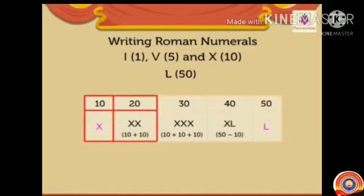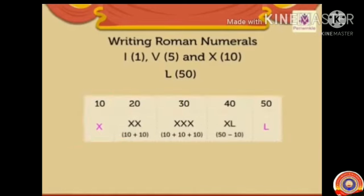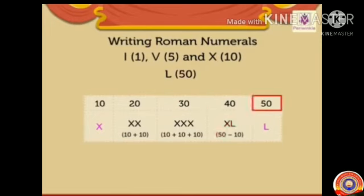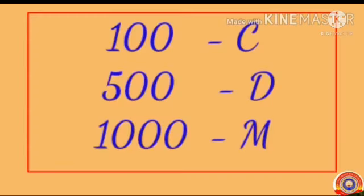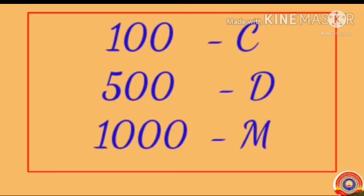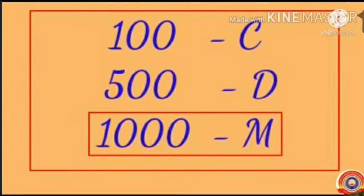Students, we learned the Roman numerals from 1 to 20. Next, look at this number: 30. It is written as XXX, meaning 10 plus 10 plus 10. Next, 40. It is written as XL, meaning 50 minus 10. Next, 50 is denoted by the letter L. Also, in the Roman number system, 100 is denoted by C, 500 is denoted by D, and 1000 is denoted by M.